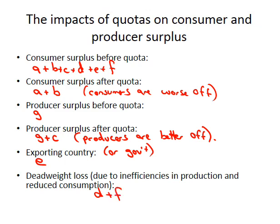The exporting country or the government receives area E as quota rents. The deadweight loss due to inefficiency in production and reduced consumption is D plus F. Area D relates to inefficient domestic producers producing more, and area F reflects the reduced consumption caused by the higher price — the same explanation as seen in the tariff analysis.